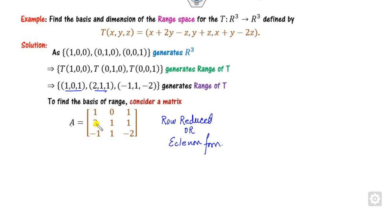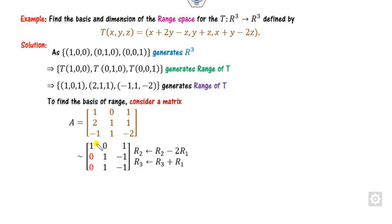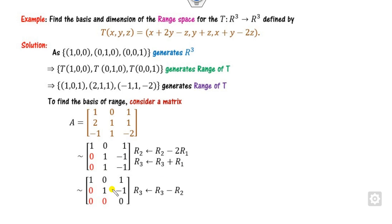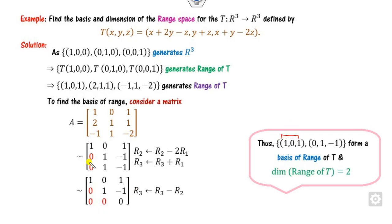After row reduction, you obtain the row echelon form. The non-zero rows form the basis of the range space. The two non-zero rows are (1, 0, 1) and (0, 1, −1). Since there are two basis vectors, the dimension of the range space is 2.